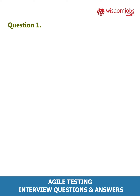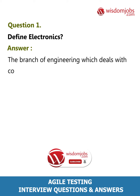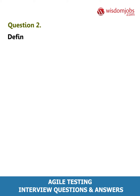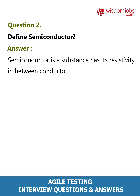Question 1: Define electronics. Answer: The branch of engineering which deals with conduction of current through vacuum, gas, or a semiconductor. Question 2: Define semiconductor. Answer: A semiconductor is a substance that has its resistivity in between conductors and insulators.